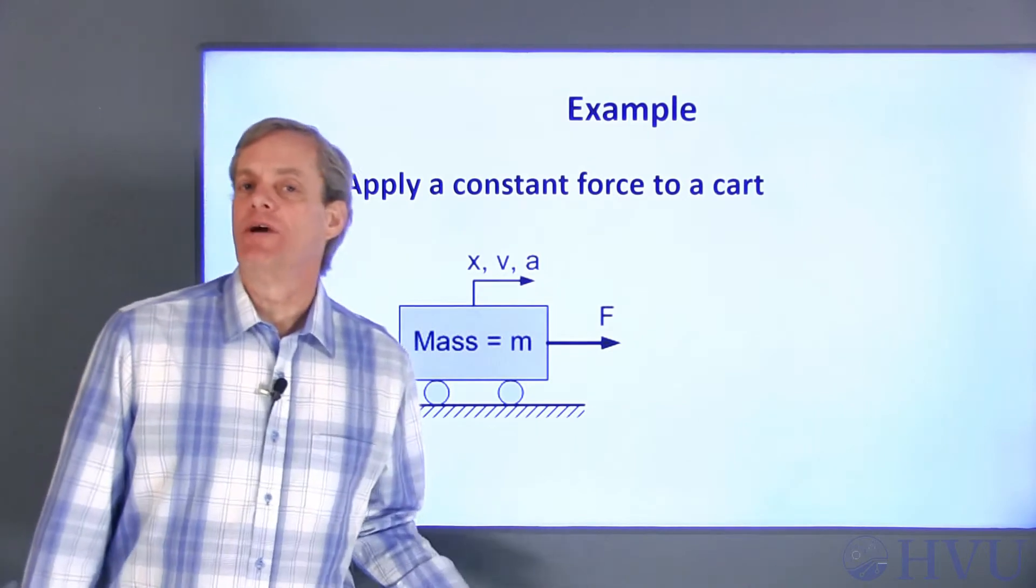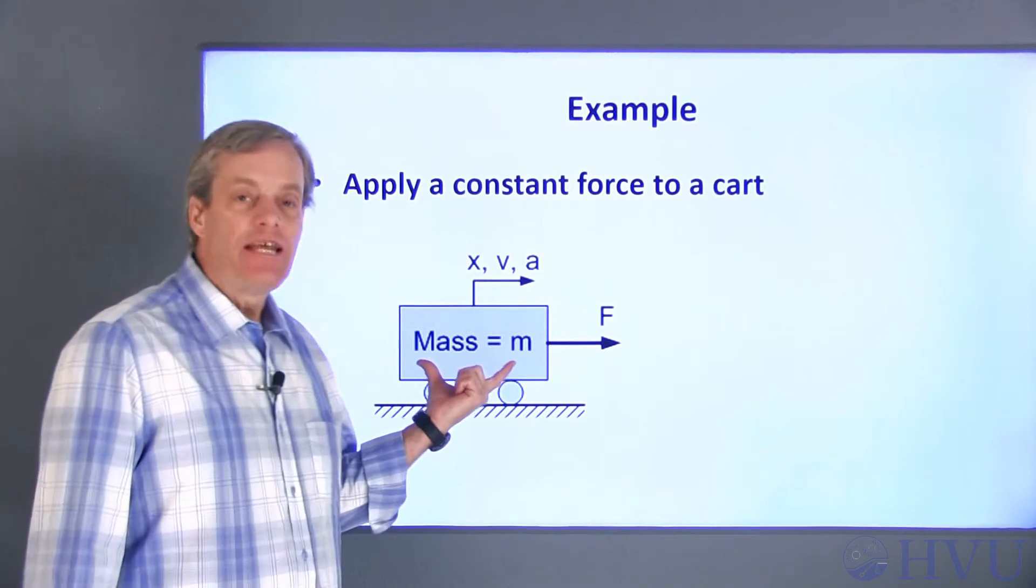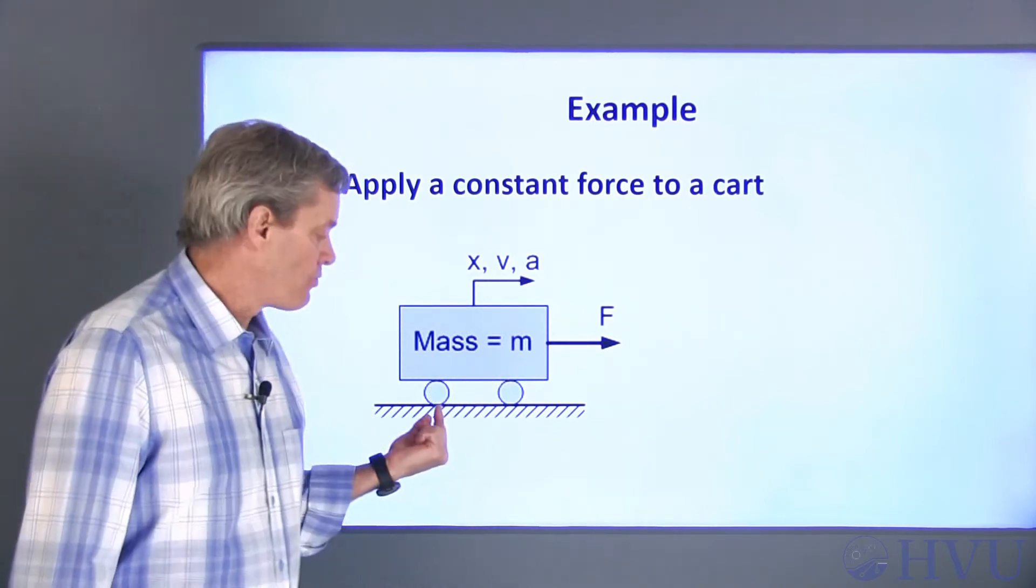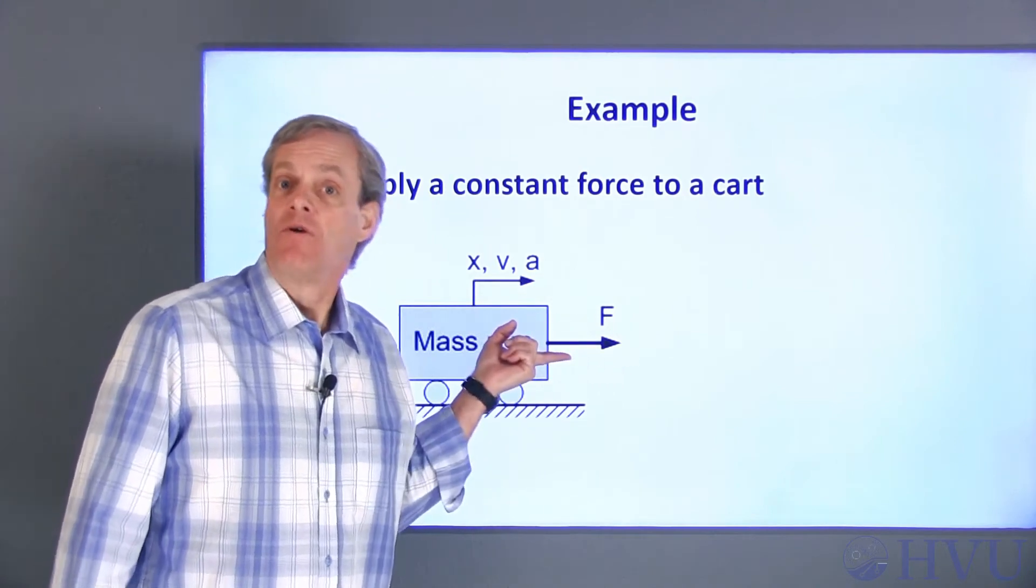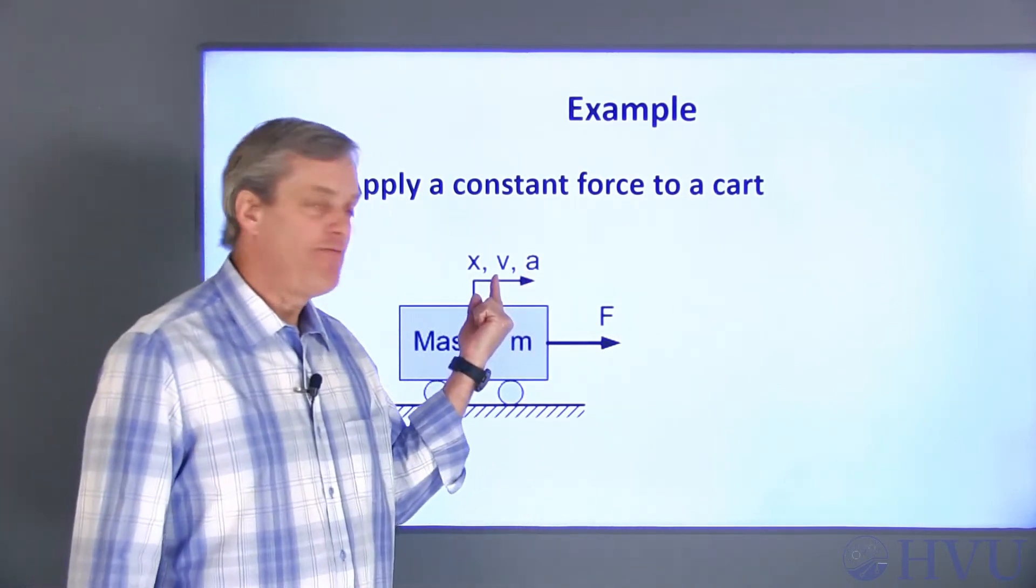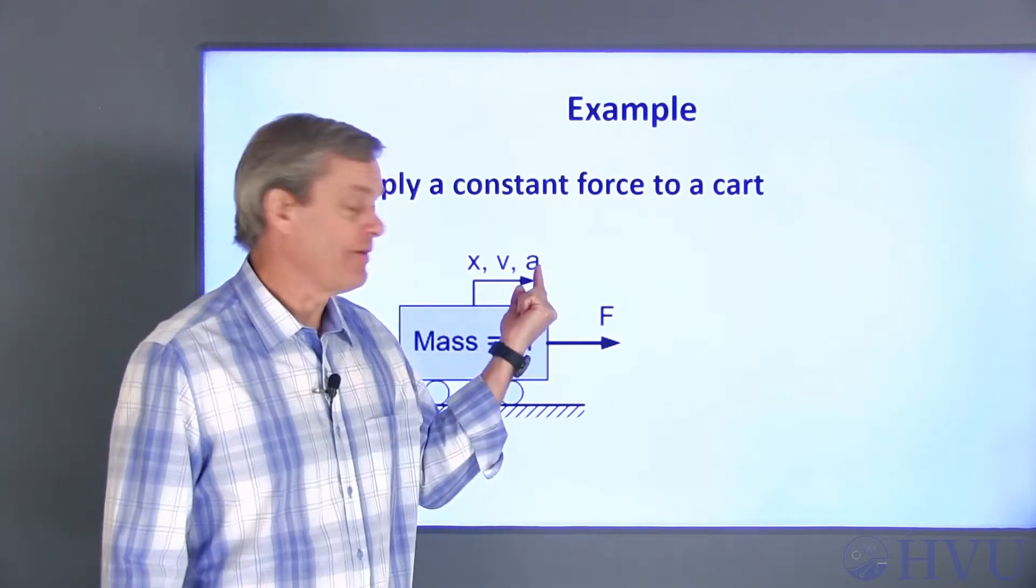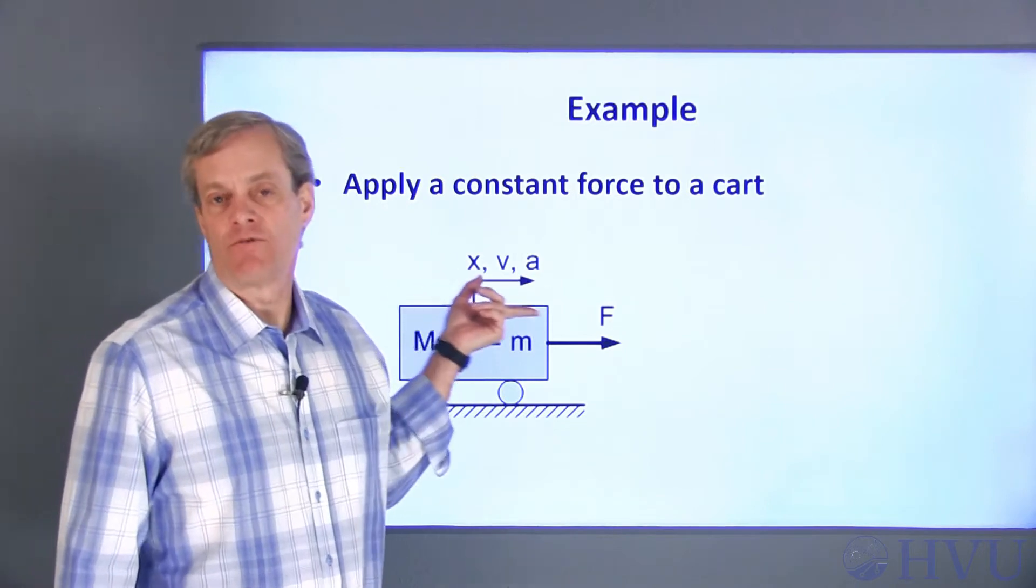Let's look at this equation in the special case when the force applied to the mass is constant. I've got a stationary mass m on rollers and I'll apply a constant force to the mass rightward starting at time t equals zero. The variables a, v, and x are the acceleration, velocity, and position of the mass and they're assumed to be positive to the right.